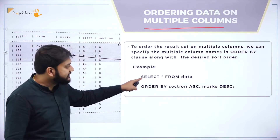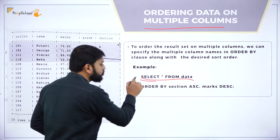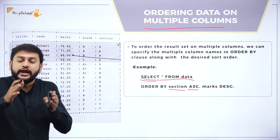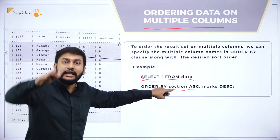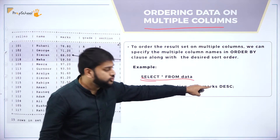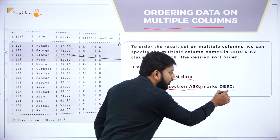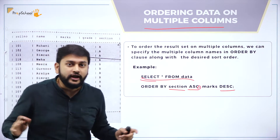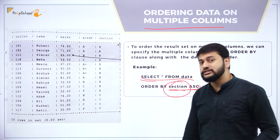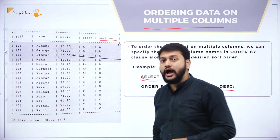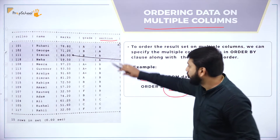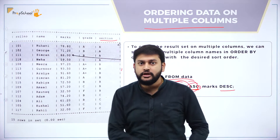The query is: SELECT * FROM data ORDER BY section ASC, marks DESC. ASC means the data in the section column should be sorted in ascending order. Then using a comma, I add a second column — marks — which should be arranged in descending order. So first the section column is sorted: A, B, C in ascending order.